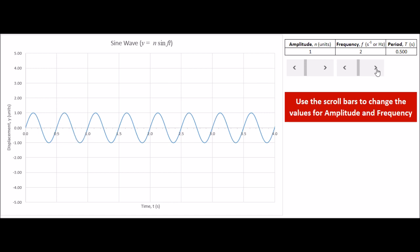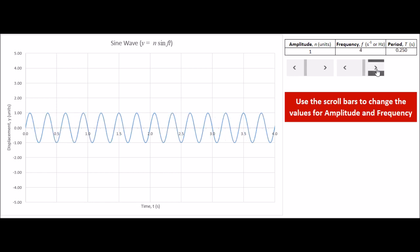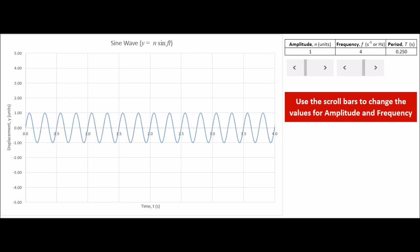So if we increase the frequency to maybe four, we should now have four: one, two, three, four cycles in one second. The period now has decreased by one over four, which is 0.25. So the period of one wave all the time is 0.25 seconds.